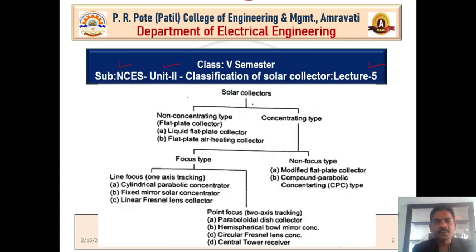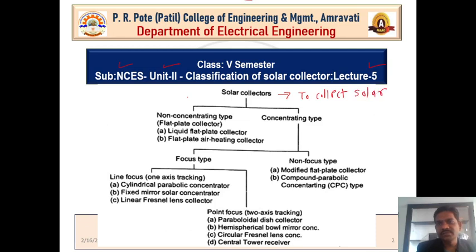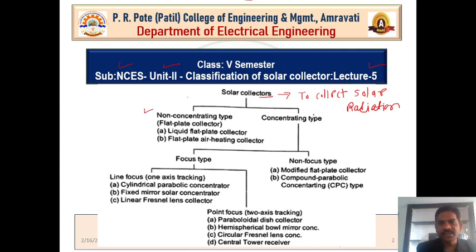First of all, we have to define solar collectors. A solar collector means a device used to collect solar radiations — to collect solar radiations is called a solar collector. This solar collector is classified into two types: the non-concentric type and the concentric type.